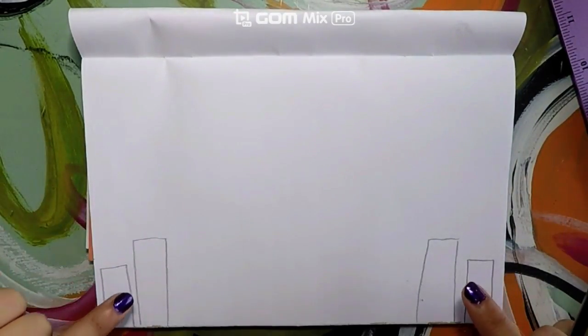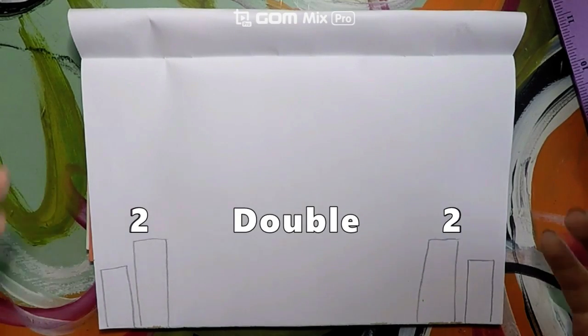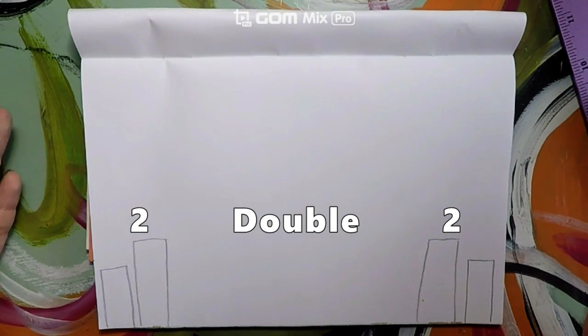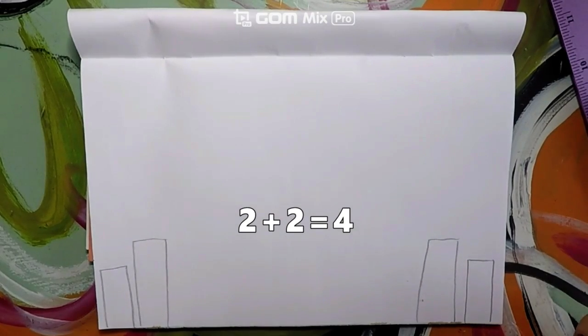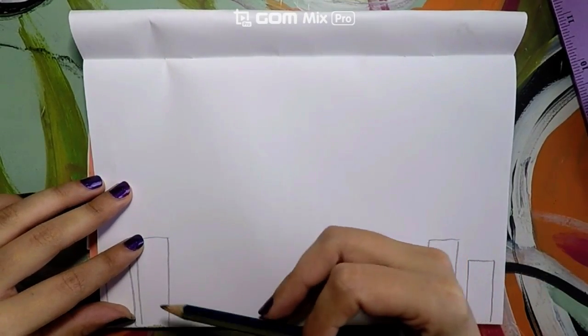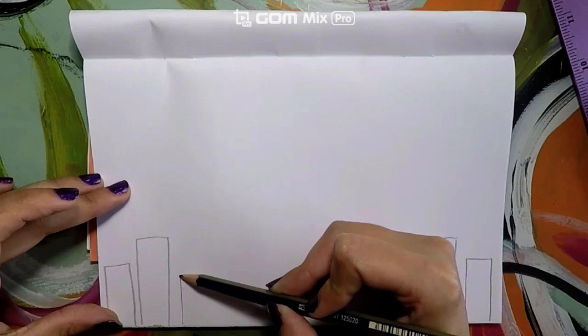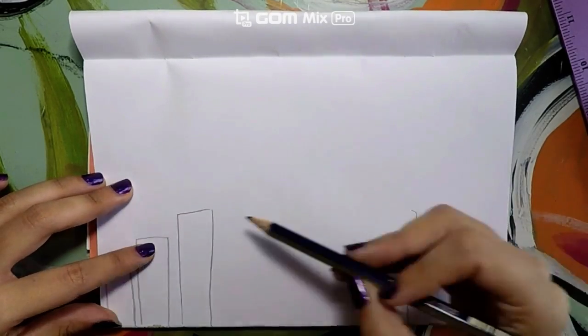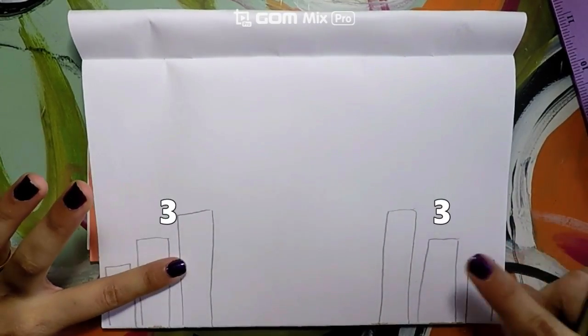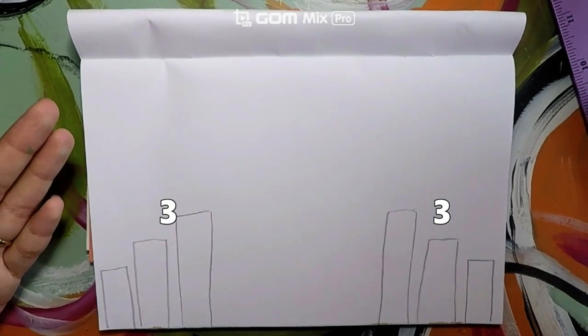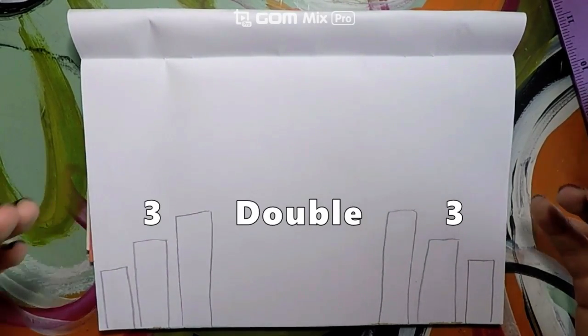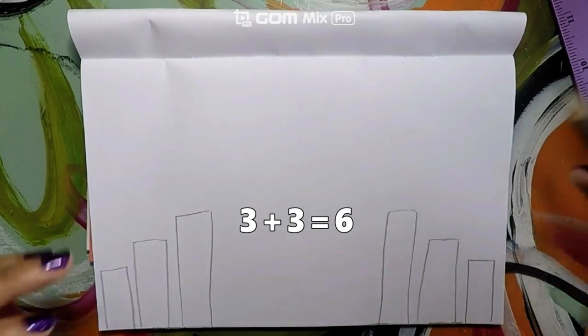I have 2 and 2. That's a double. How many do I have in total? 4. That's right. Let's see if we can make more doubles. I have 3 and 3. That's a double. How much is 3 plus 3? That's 6.